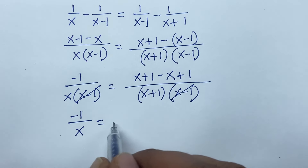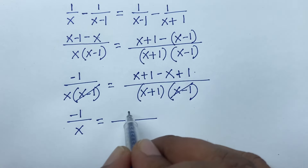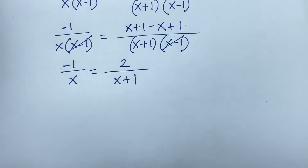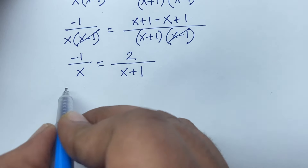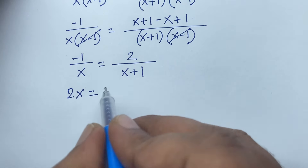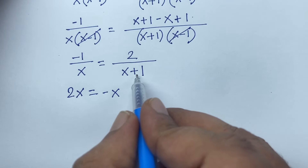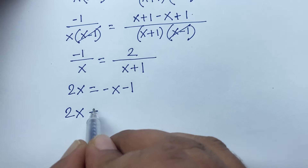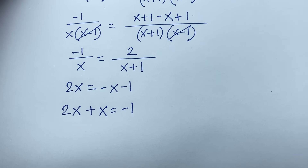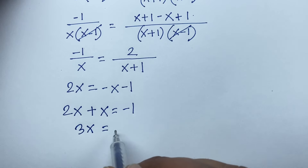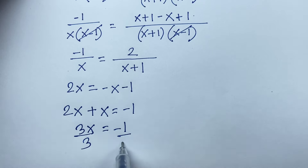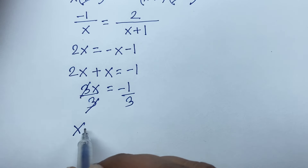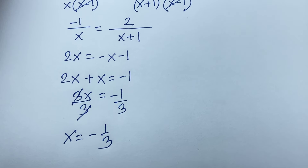Cross-multiplying: 2 times x equals minus 1 times x plus minus 1 times 1, which is minus x minus 1. Moving the x term over, it becomes positive, so 2x plus x equals minus 1. That gives us 3x equals minus 1. Dividing both sides by 3, the 3's cancel, and x equals minus 1 over 3. This is our final answer.